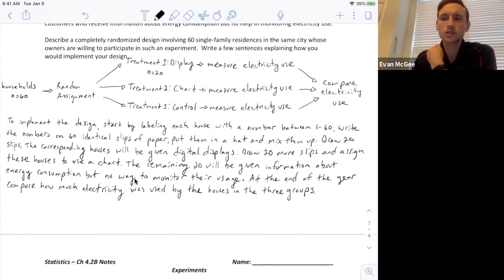Okay so just like in the previous videos we're going to assign a number to each house between one and 60. We'll write those numbers on identical slips of paper, put them in a hat, mix them up, draw out 20, those first 20 corresponding houses get displays, shake it up draw 20 more, those houses are assigned to a chart, and then the remaining 20 are given information but they have no way of monitoring their usage. Finally at the end we will compare these three groups and how much electricity was used. So you can see the comparison in the end, we need to make sure we're saying what the response variable being measured is and how we've assigned the households randomly to the different treatments.